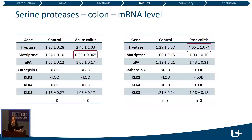Looking at the qPCR results for serine proteases in the colon: comparing control and acute colitis, tryptase showed a slight increase but this was not significant, while matriptase showed a significant decrease in the acute colitis group. For the other serine proteases there were no significant differences, and some were below the limit of detection. Comparing control and post-colitis animals, there was a significant increase in tryptase expression, but no difference for matriptase. Again, no significant differences were found for the other proteases.